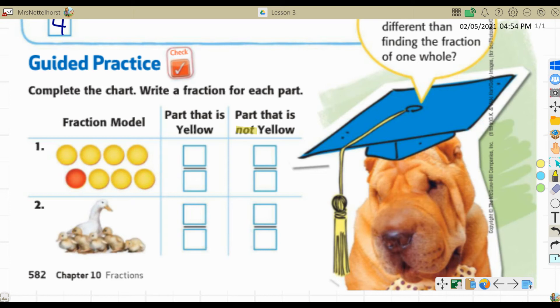In the first column, we see the fraction model. In the second column, we're going to put the part that is yellow. And then in the third column, we're going to put the part that is not yellow. So this is guided practice. So that means that I'm going to explain it to you. And then you're going to pause the video and then come back and see if you got the right answer.